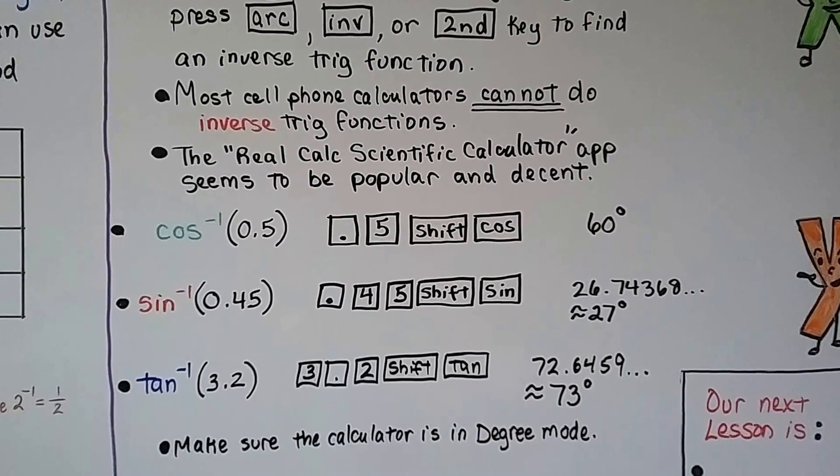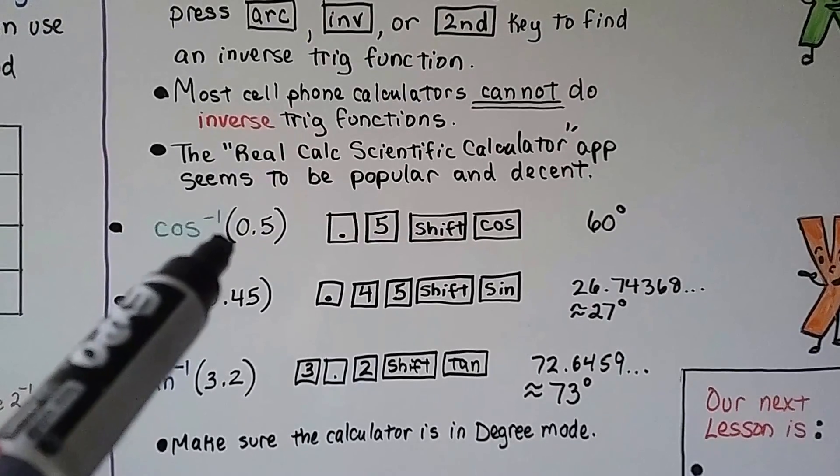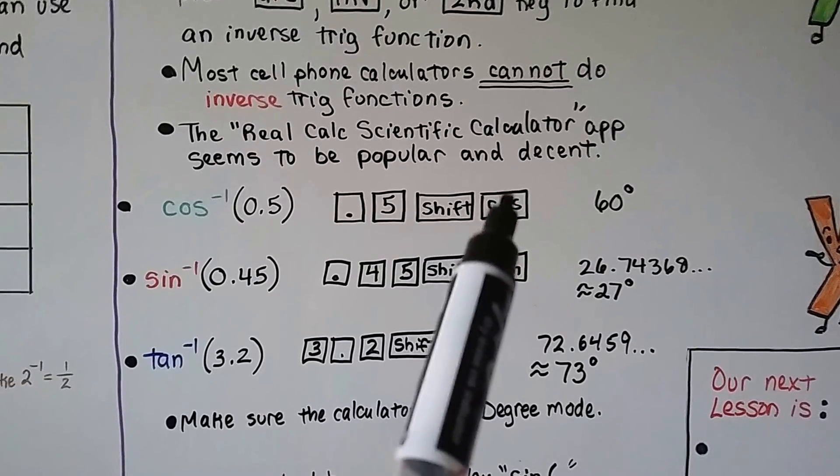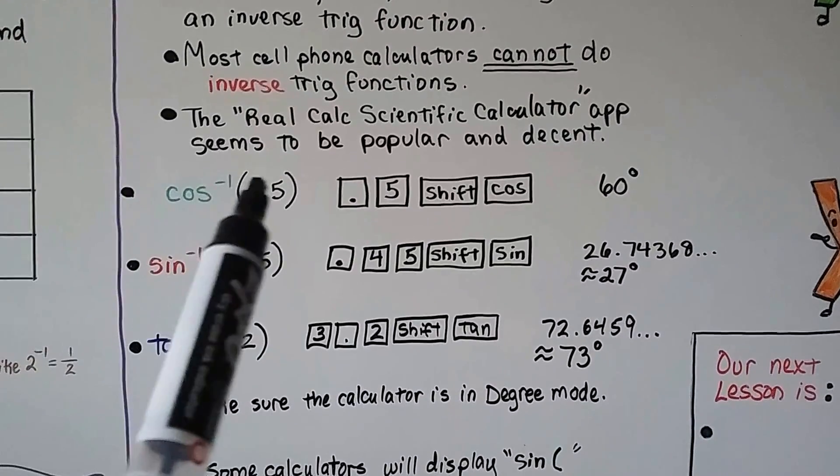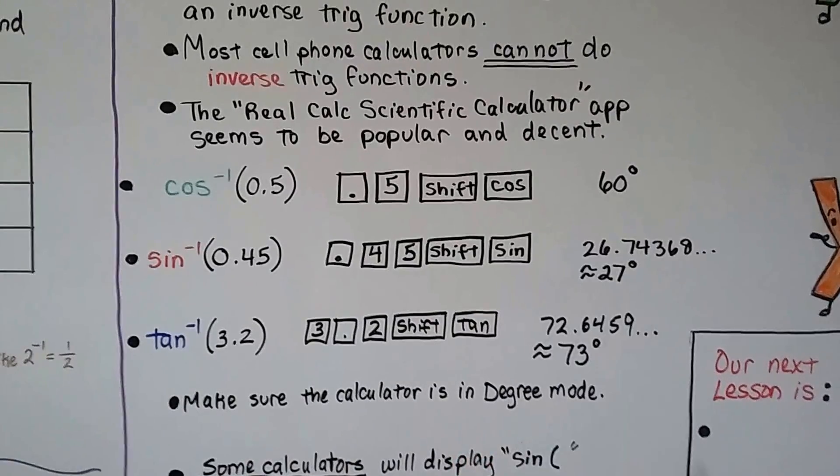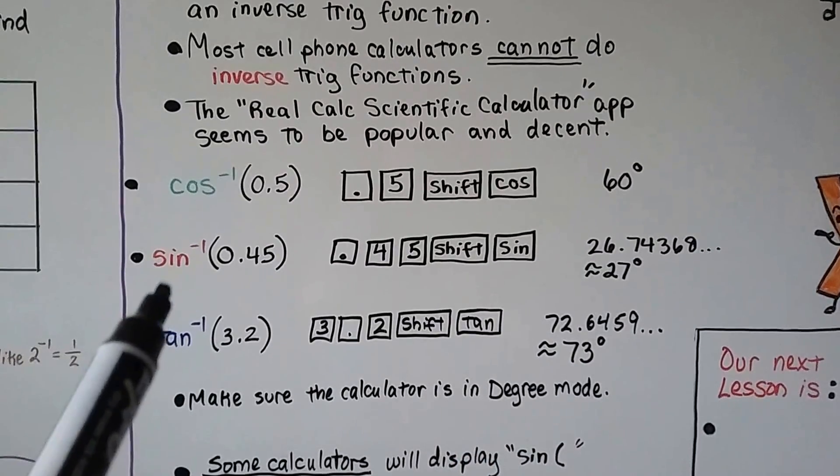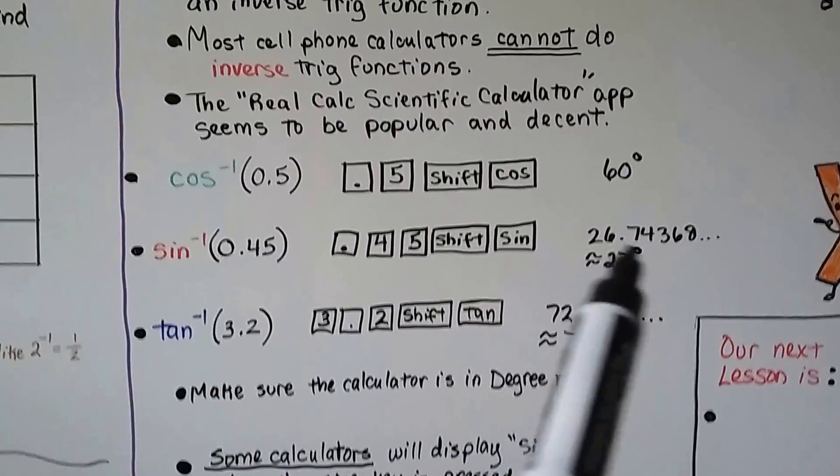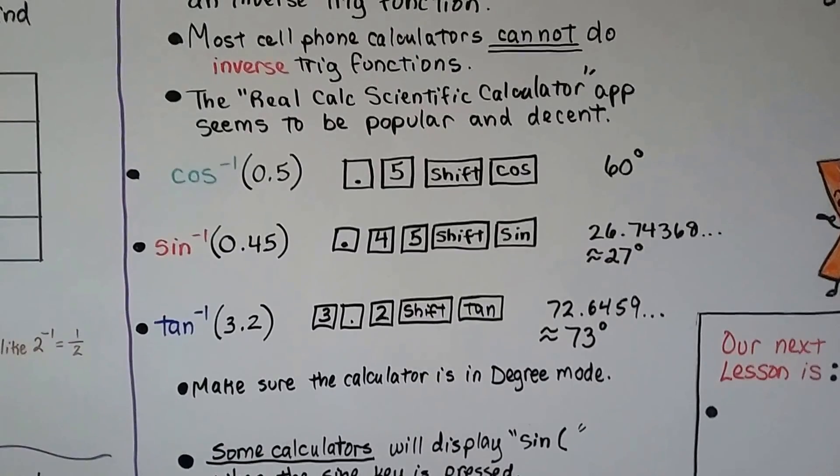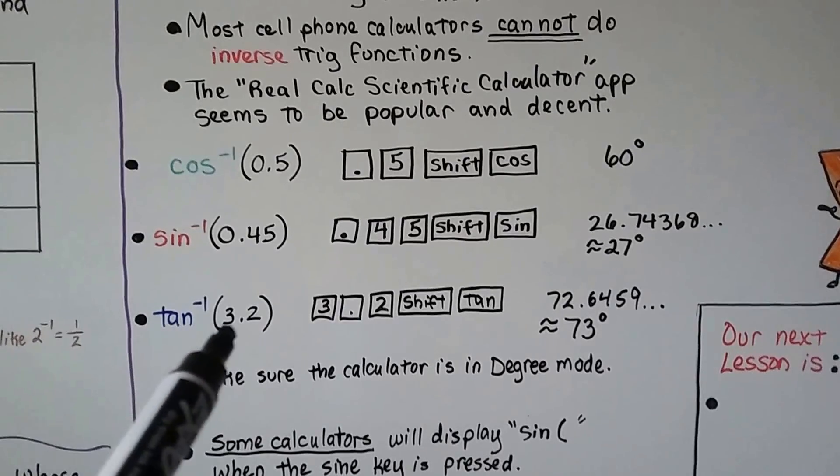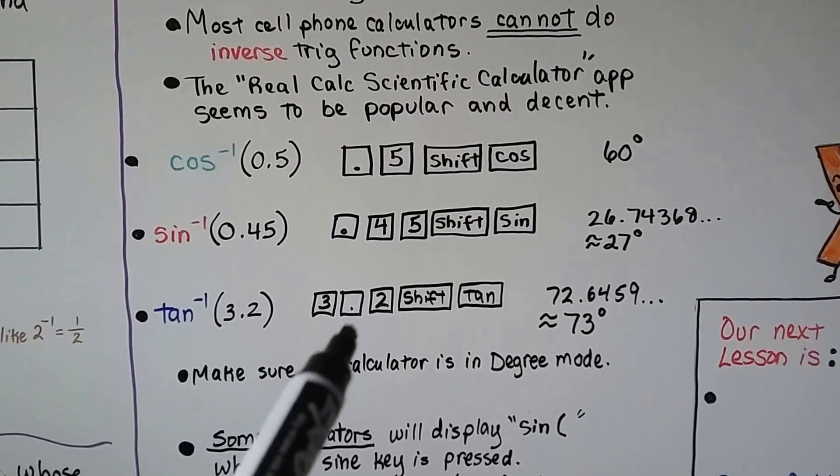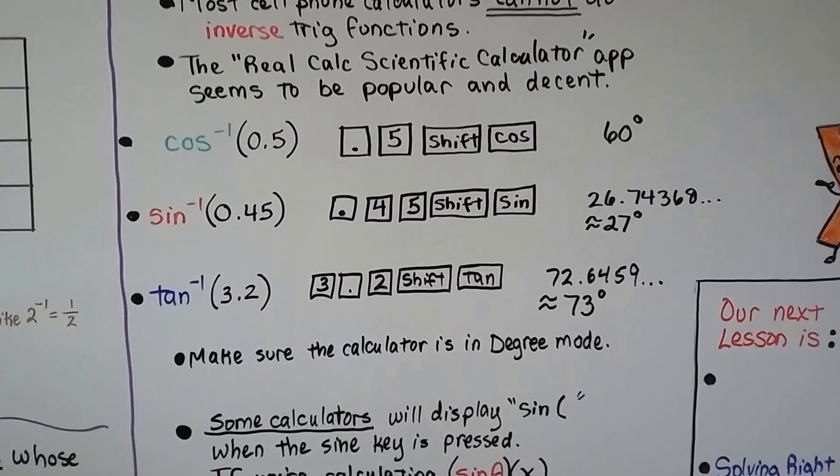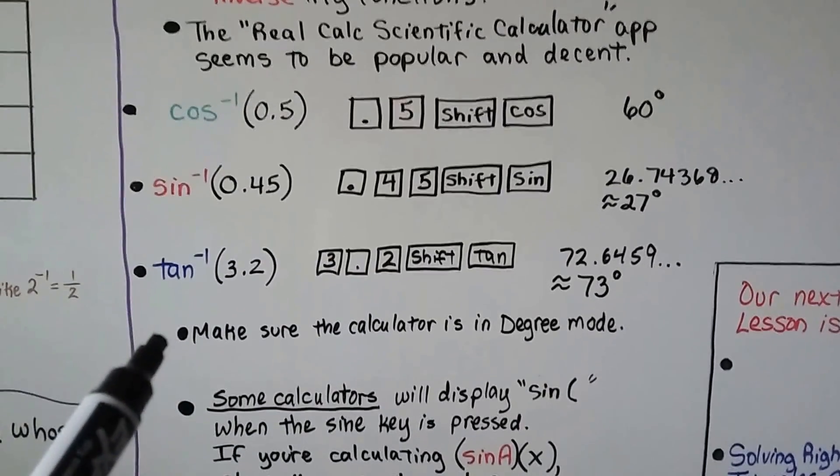If you have this Real Calc app on your phone and you want to find the inverse cosine of 0.5, all you do is push 0.5, then hit the shift button and the cosine key. That'll give you the inverse by pushing the shift, and it'll tell you it's 60 degrees. If you want to find the inverse sine of 0.45, you hit 0.45, the shift key again, and then the sine key. It'll give you this long decimal that we can round to 27 degrees. Make sure the calculator is in degree mode.